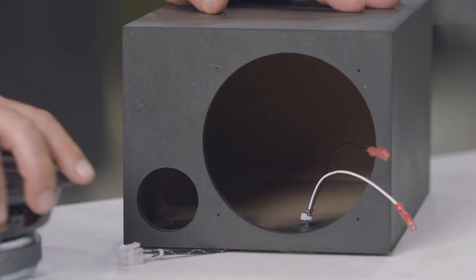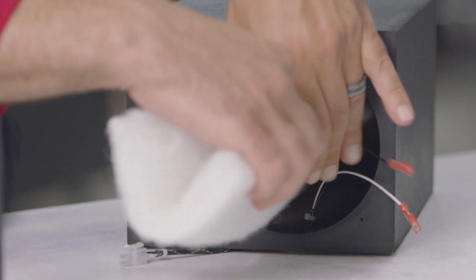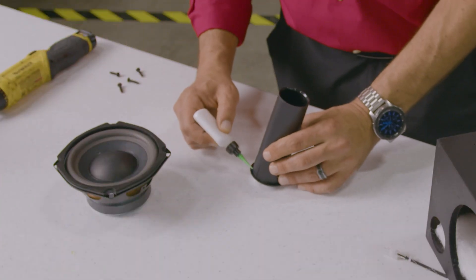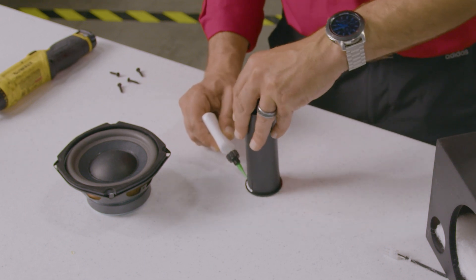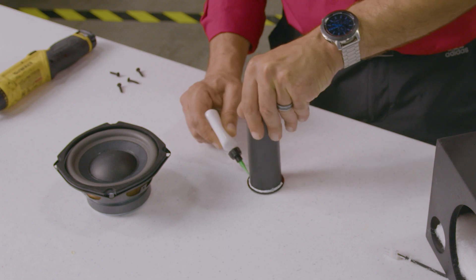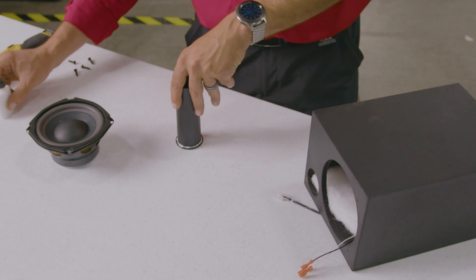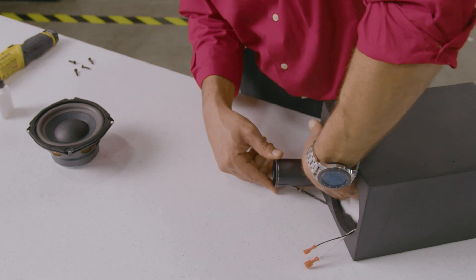Our next step is to insert the Dacron into the enclosure. Next we'll be installing the port. We apply bead of adhesive around the flange of the port. The hole in the enclosure is undersized so that the port fits snugly into the hole but the adhesive locks it in place.